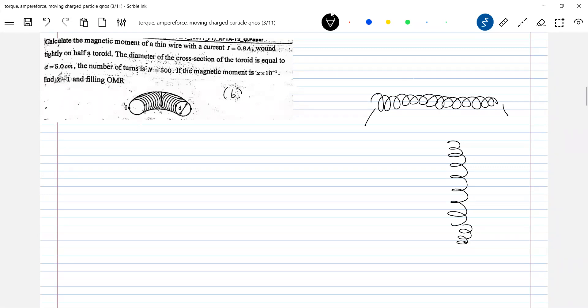So calculate the magnetic moment of a thin wire of current I wound tightly on half a toroid. The plane diagram will appear, they're closely wound here. Let me draw it simple like this.